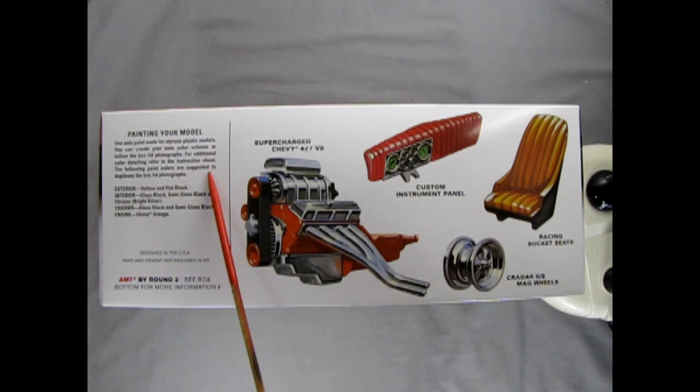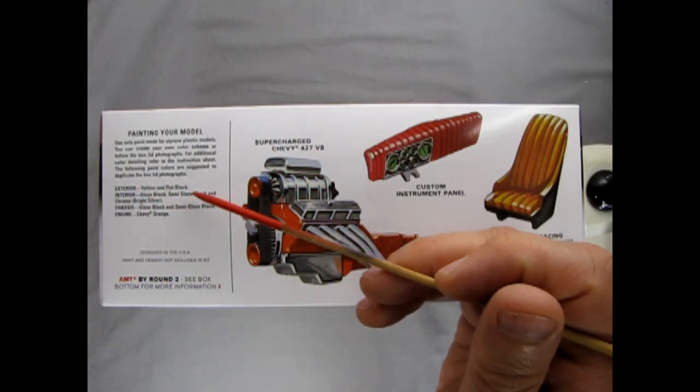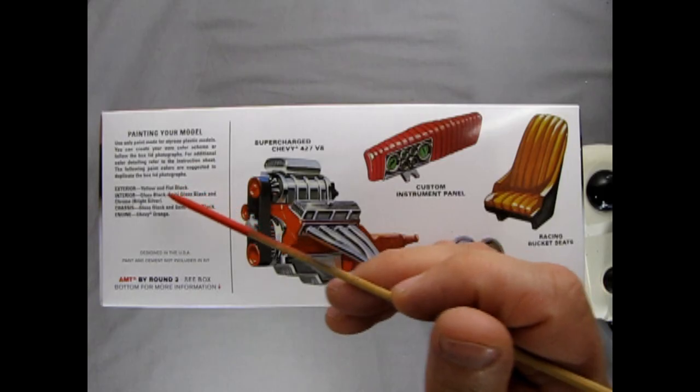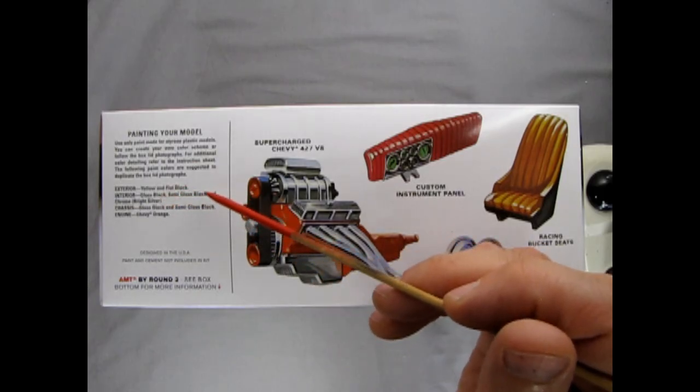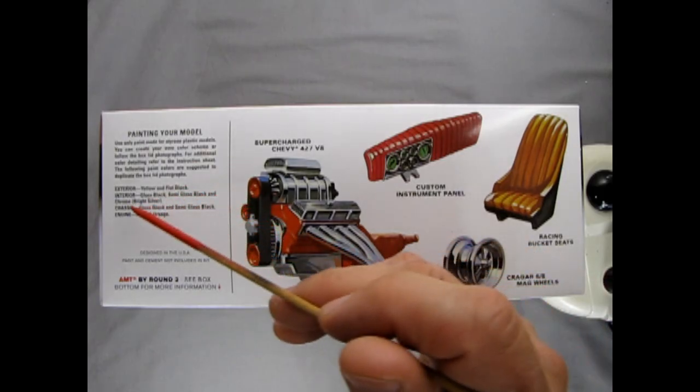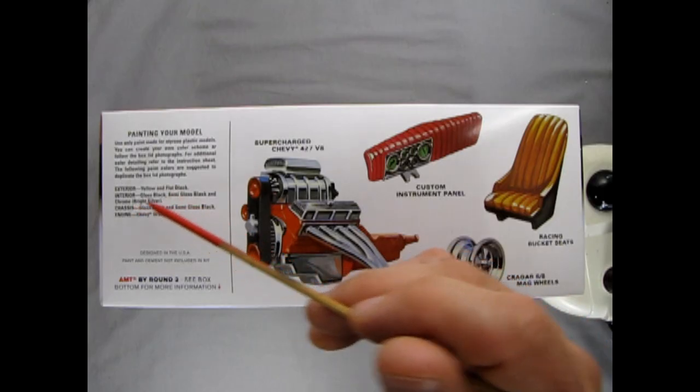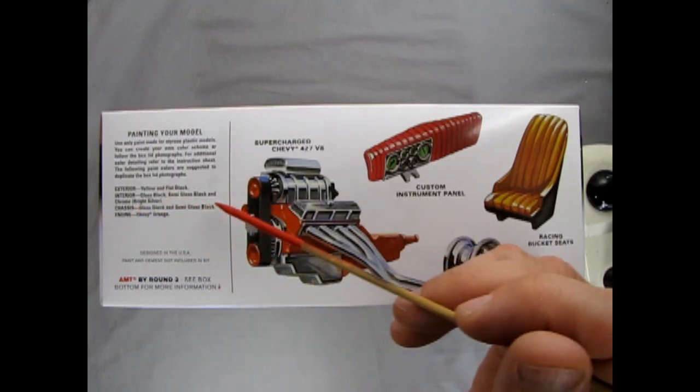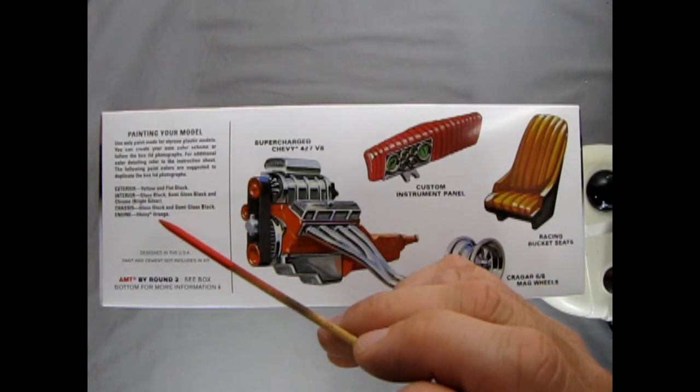The following paint colors are suggested to duplicate the box lid photographs. Exterior yellow and flat black. Interior gloss black, semi-gloss black and chrome. Bright silver. Chassis gloss black and semi-gloss black. And the engine should be Chevy orange.